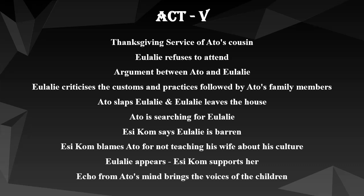Ato tells her, 'When in Rome, do as the Romans do.' She tells him that if he can preach so well, then he should preach to his own people to try to have a little understanding for things they know nothing about. Ato tells her to shut up and asks how much does the American Negro know. The argument intensifies to the point that Eulalie calls them 'bastards, stupid, narrow-minded savages.' Ato loses his temper, slaps her, and leaves the house.